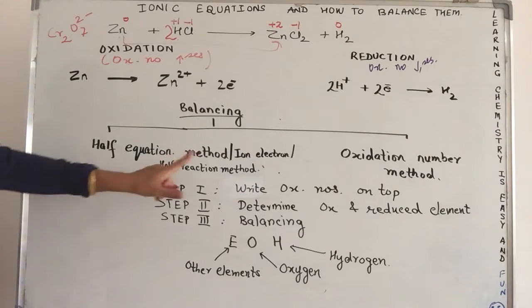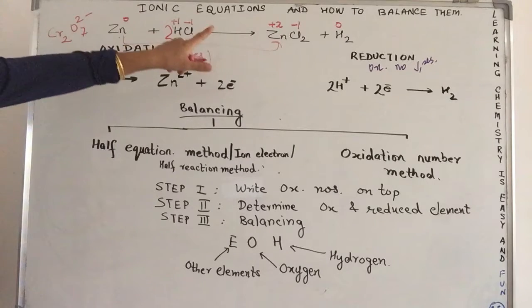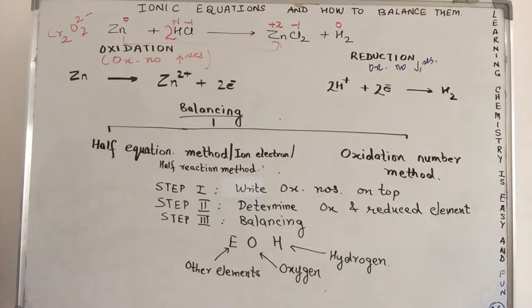Balancing of a chemical equation or an ionic equation by any of these methods involves certain steps. The first step is to write the oxidation numbers of the elements on the top in the equation which is provided to you. Now, if you see, we've already done the first step, right? We've already written the oxidation numbers on the top.